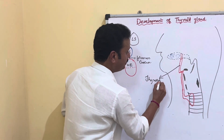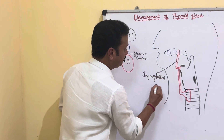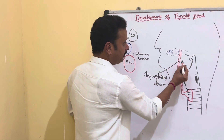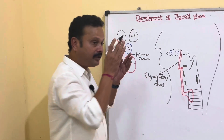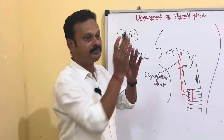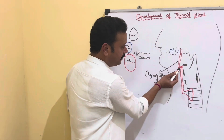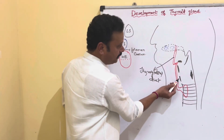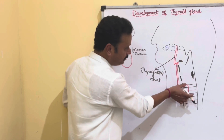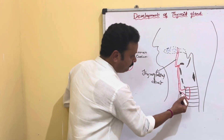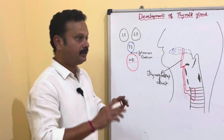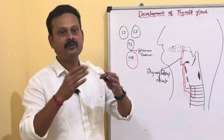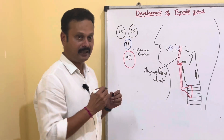This thyroglossal duct descends downwards in front of the hyoid bone in the midline, though sometimes it recurves behind the hyoid bone. It then descends in front of the thyroid cartilage and the cricoid cartilage, and on reaching the upper aspect ventral to the trachea, it forms a bilobed mass — the primordium of the isthmus and the lateral lobes of the thyroid gland.